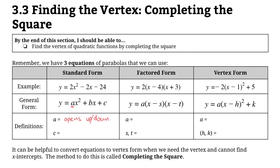The c value is actually your y-intercept. To check that, if you input 0 for x — because for every y-intercept your x value is 0 — you will get your c value.